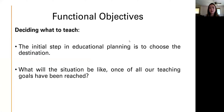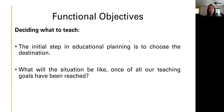Now we're going to talk about functional objectives and functional activities. Deciding what to teach: the initial step in educational planning is to choose the destination. Once we know it, we can decide how to get from point A to B. We teach skills to learners with the intention of creating an impact in their lives — helping to build tools that can be used in the real and natural environment. This can mean getting a job, living independently, or becoming and remaining as independent as possible, and being happy through social and communication skills.